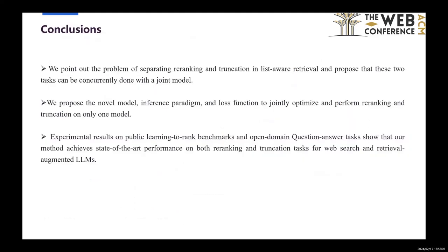In conclusion, first, we point out the problem of separating reranking and truncation in list-aware retrieval and propose that these two tasks can be concurrently done with a joint model. Second, we propose a novel model inference paradigm and loss function to jointly optimize and perform reranking and truncation on only one model.